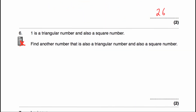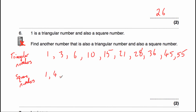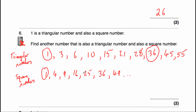Question six says one is a triangular number and also a square number. Find another number that's both. Listing triangular numbers: 1, 3, 6, 10, 15, 21, 28, 36, 45, 55, and so on. Listing square numbers: 1, 4, 9, 16, 25, 36, 49, and so on. We can see that 36 appears in both lists, so 36 is both a triangular number and a square number.